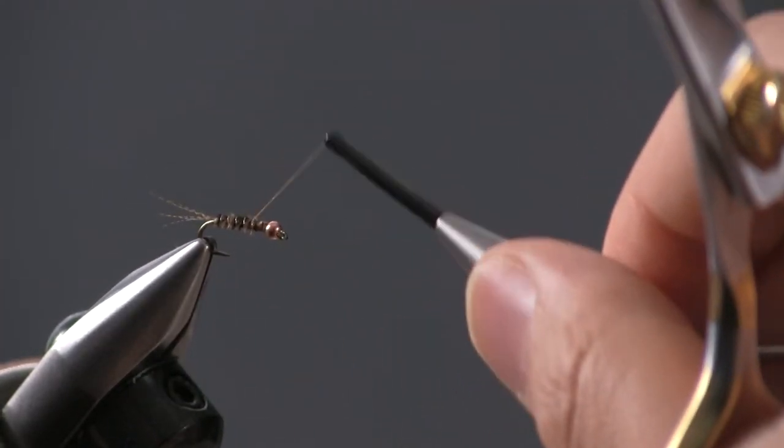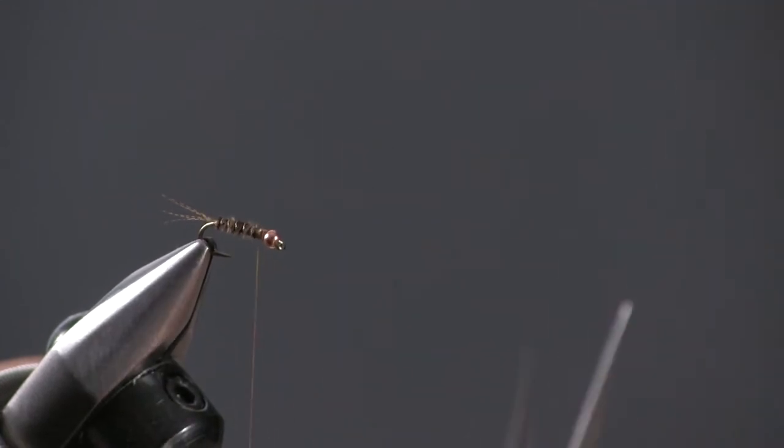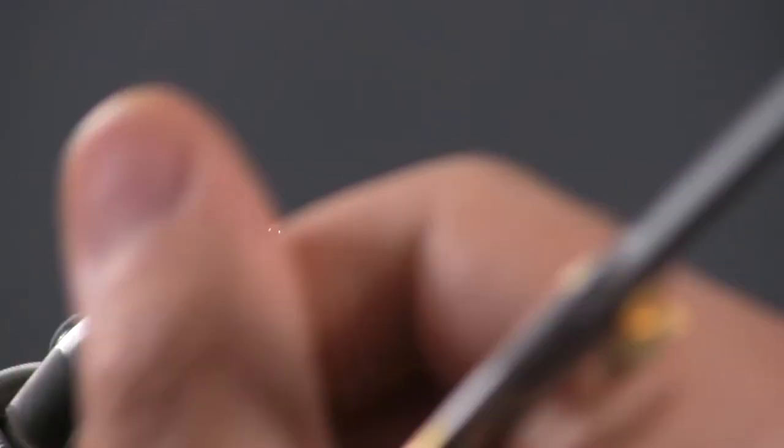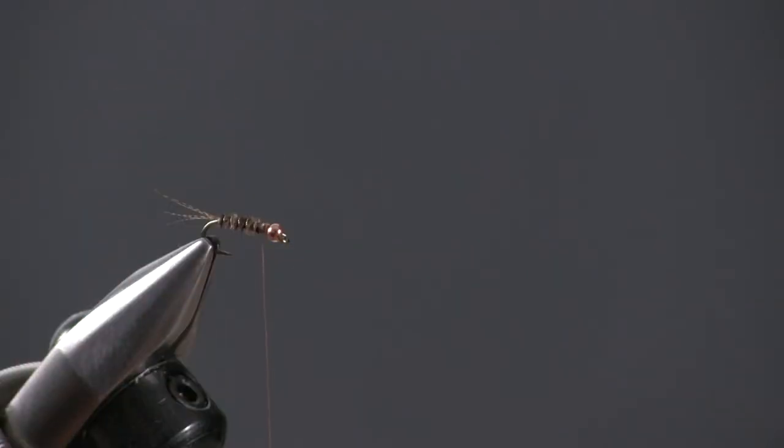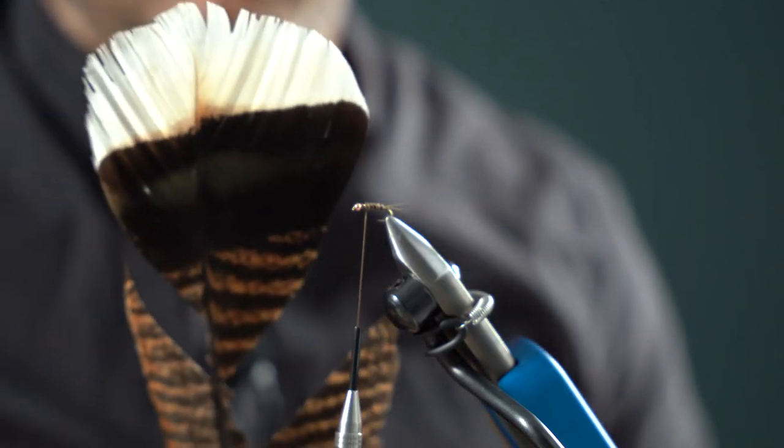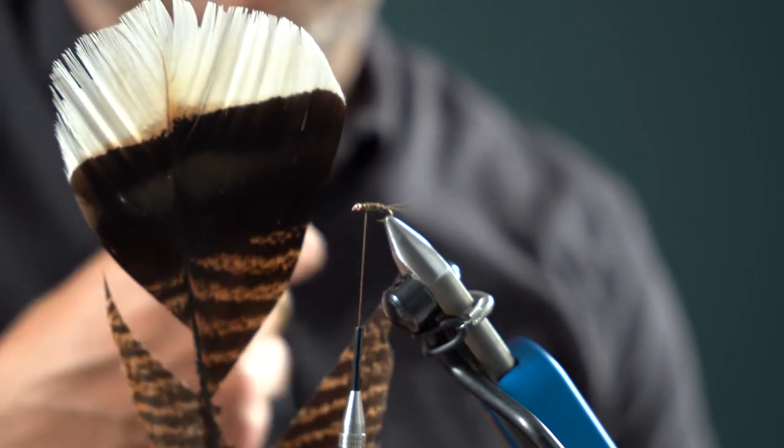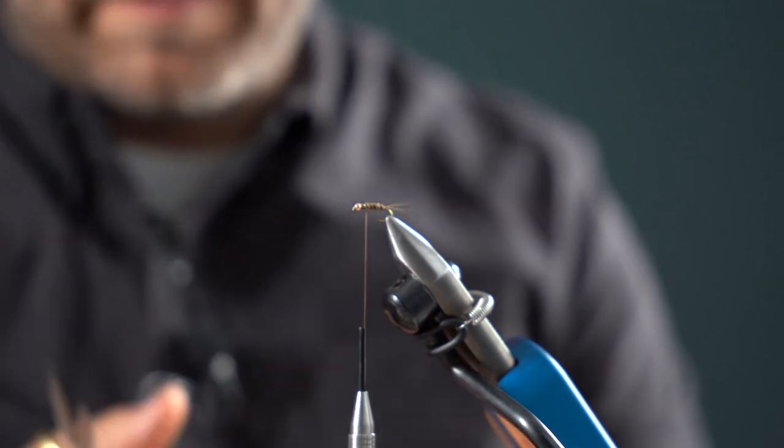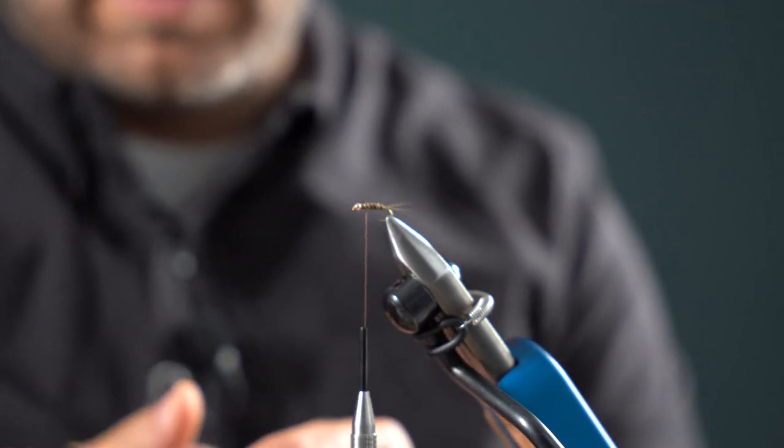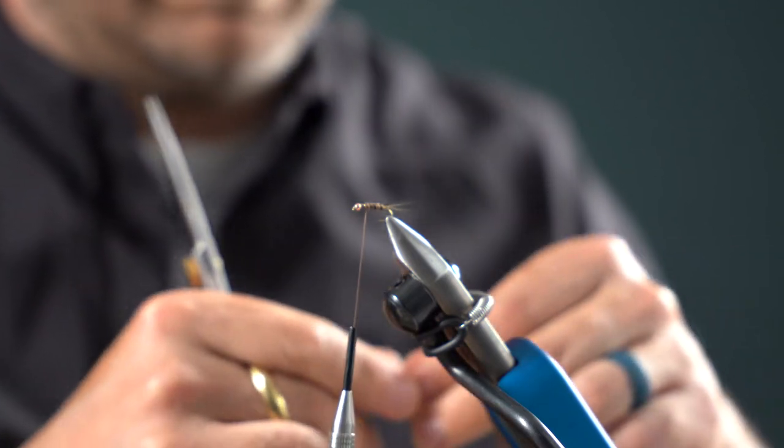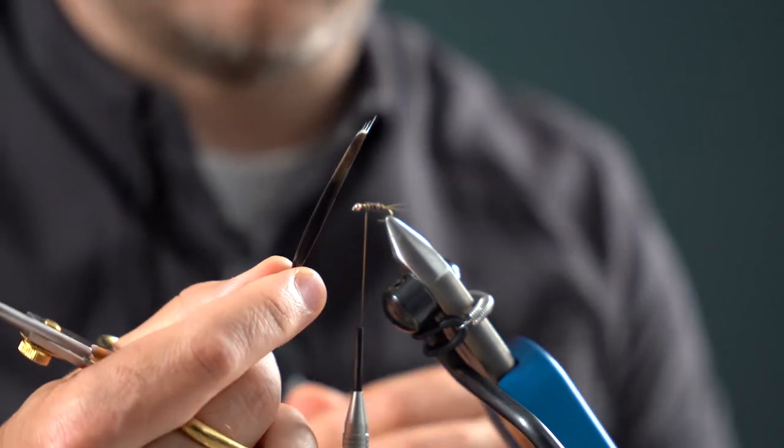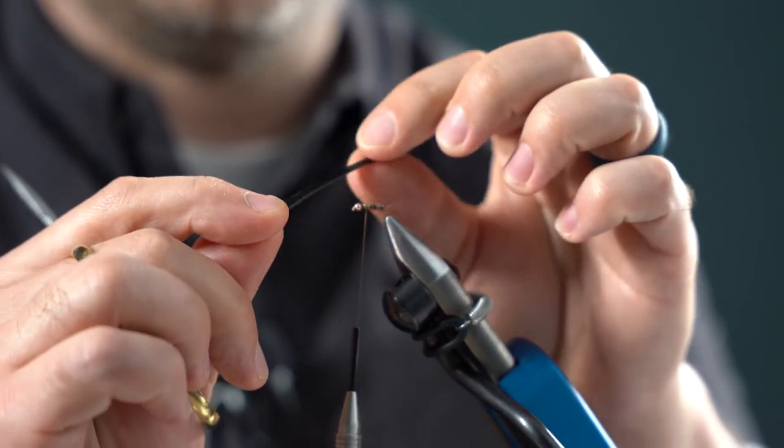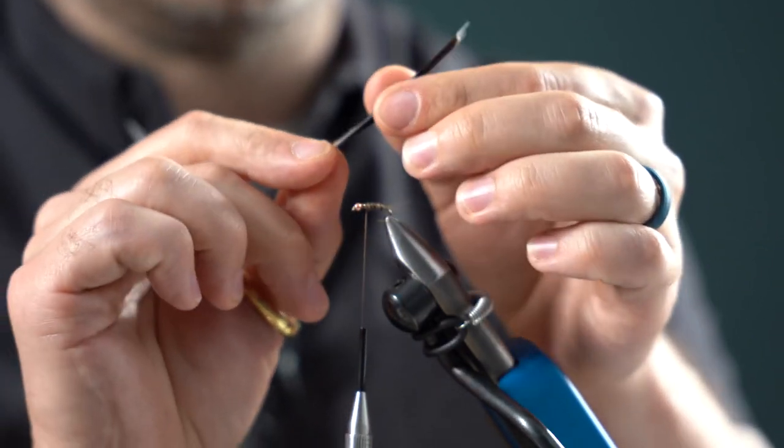So we're going to bring that thread back to about the one-third point if we're including the bead in that measurement. And we're going to tie in a wing case that folds over the top of this. And for this wing case, I'm going to come up here into my turkey tail feather. And I'm going to use some of this section that's really dark, it's almost black. When these mayfly nymphs start to emerge and get ready to hatch out, that wing case becomes really dark. And so we're going to kind of mimic that, imitate that with this, it's almost pearlescent up here at the top of this darkened area of the turkey tail fiber.